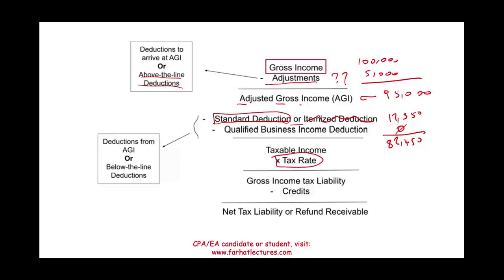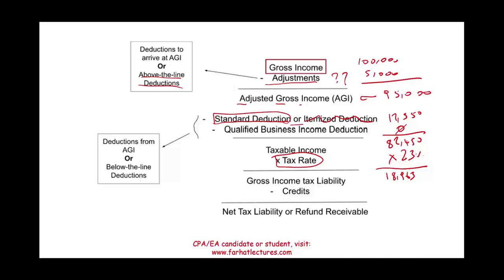Going from taxable income, you have to compute your tax — that's going to depend on your tax rate, and we'll have a separate recording showing you how to compute taxes times some rate. For the sake of this illustration, I'm going to assume a rate of 23% — this is not even real, just to make up a number. So the gross income tax liability comes out to $18,963.